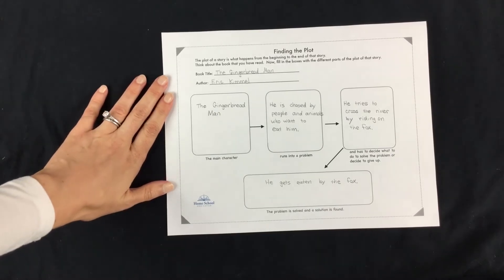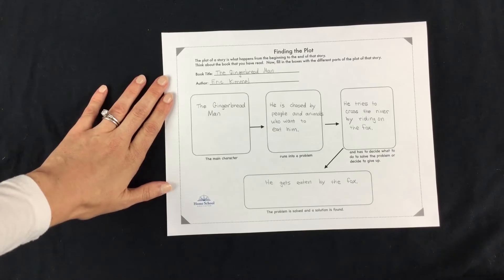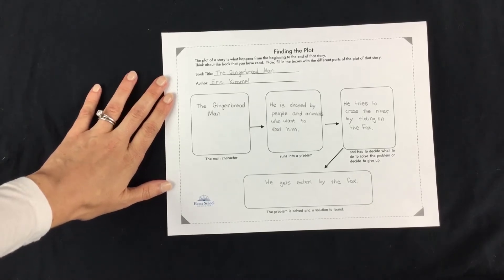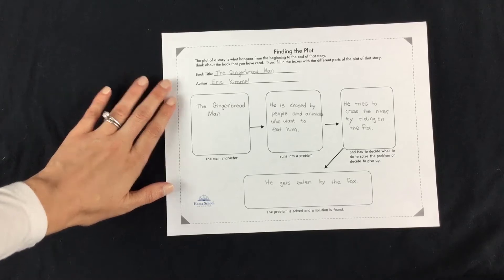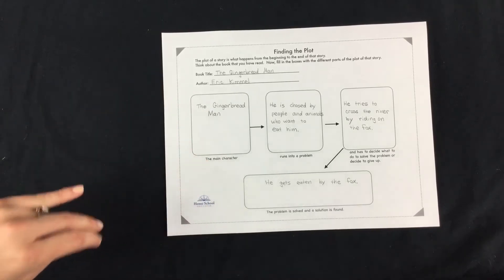So the plot involves the main character, the problem, what the character has to decide about what to do about that problem, and then what happens at the very end, the solution.